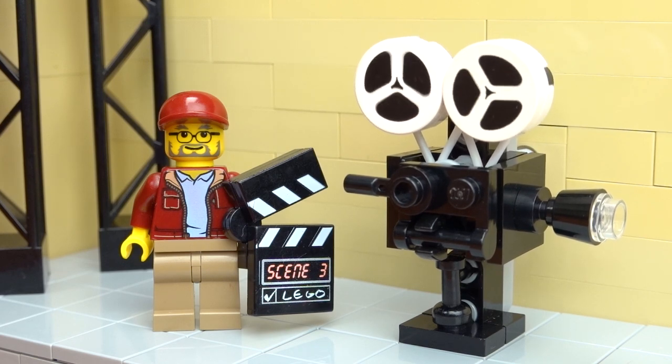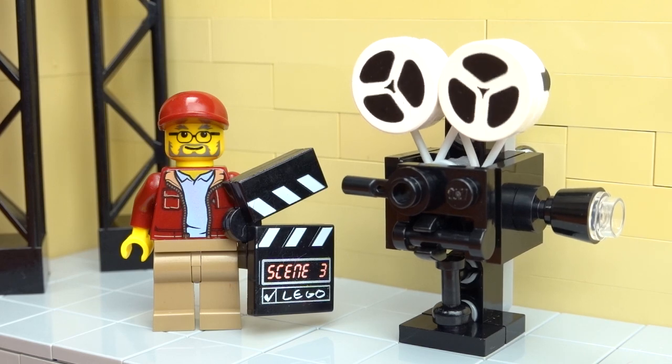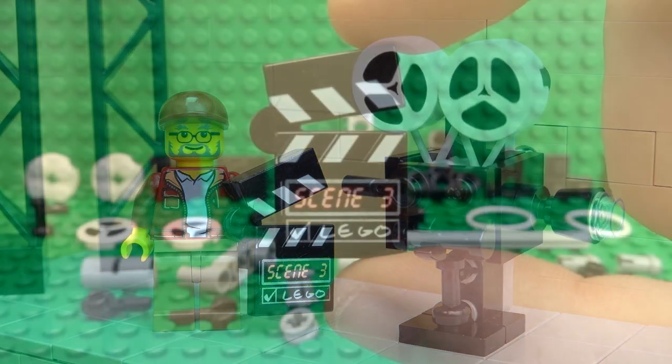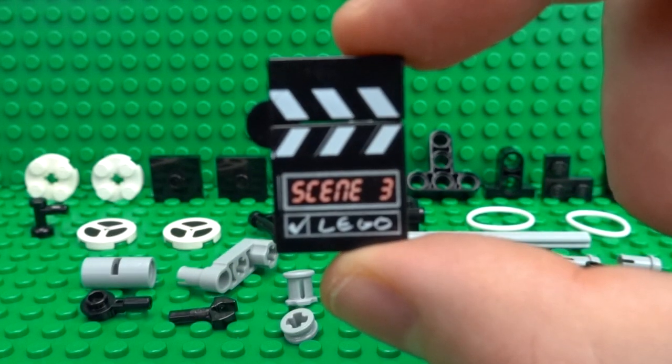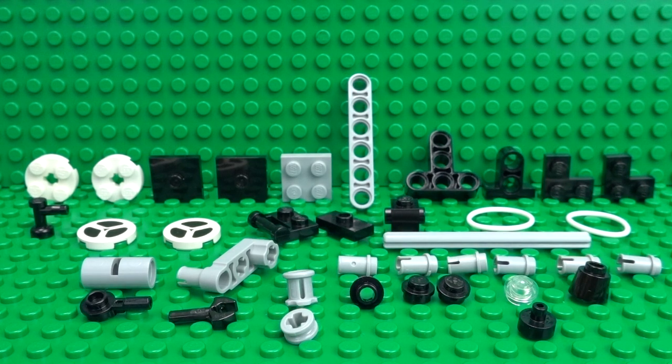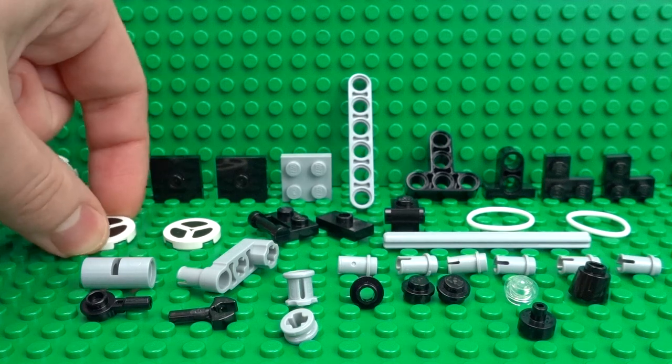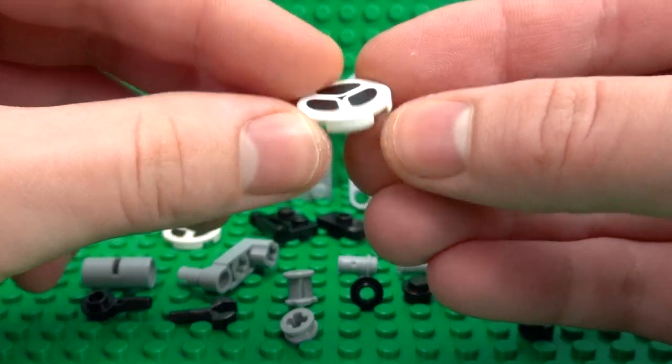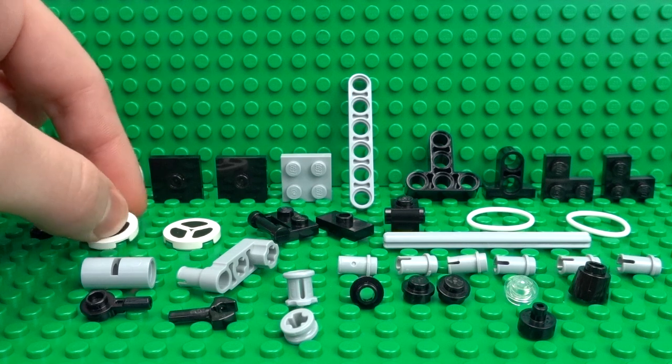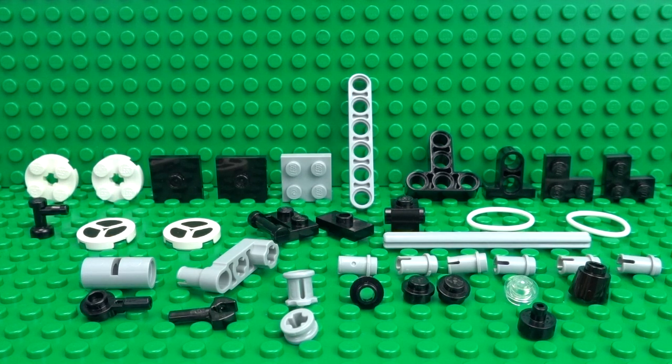So let's get started and take a look at all of the pieces you're going to need to build your working LEGO movie camera. So here's what you're going to need, and as always, I'll leave links in the description to where you can find the rarer pieces which I've used, such as these printed tape reel tiles which really enhance the build, as well as other rare pieces like these LEGO Technic rubber bands.